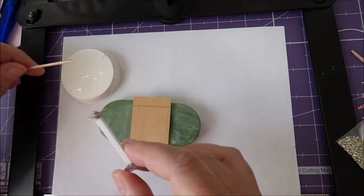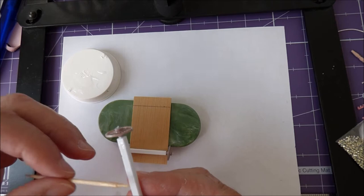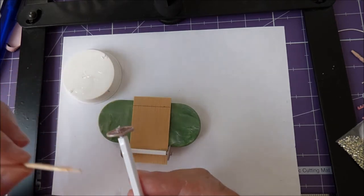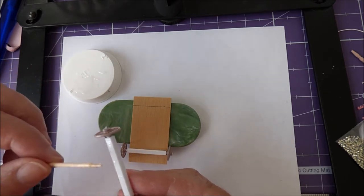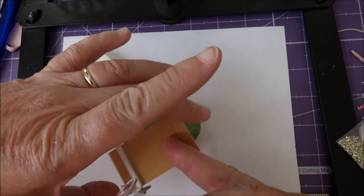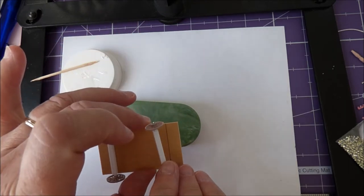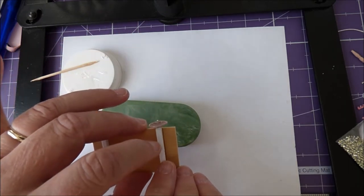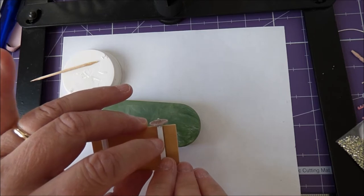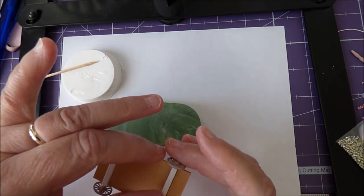Do the same with the other wheel assembly. You do have a bit of time when working with the epoxy resin to make sure that you've got your wheel placements exactly right in the right position. Check that they're exactly right before you place it down to dry.